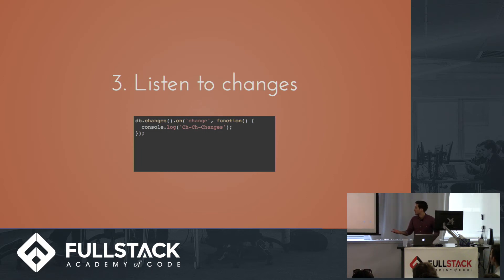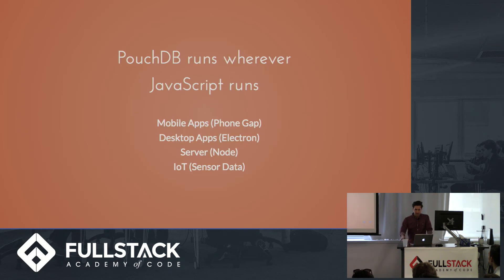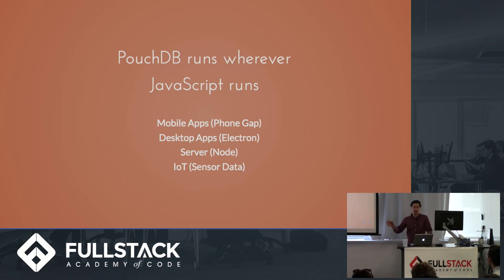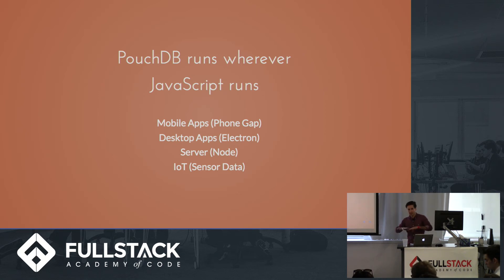With those three simple steps we have set up PouchDB. As I said, PouchDB is a JavaScript database so it will run everywhere JavaScript runs — a browser, a mobile app using something like PhoneGap, a desktop app, or a server app. You can use exactly the same code across all of these environments because PouchDB abstracts away the underlying storage mechanism.